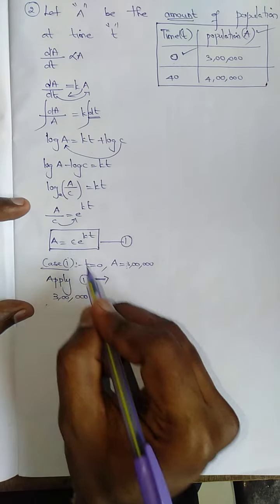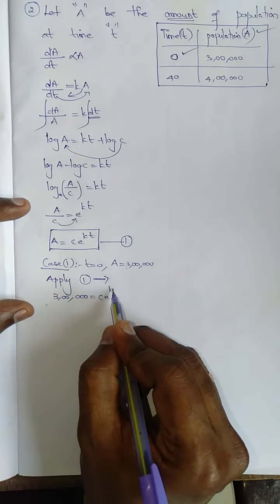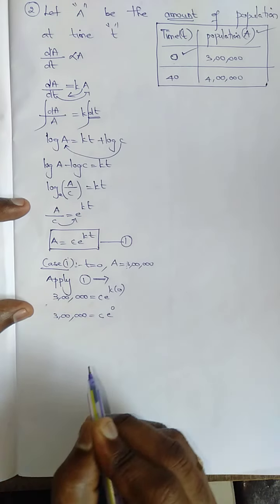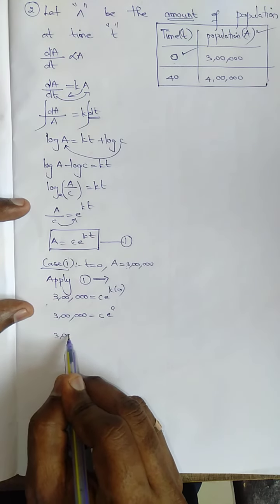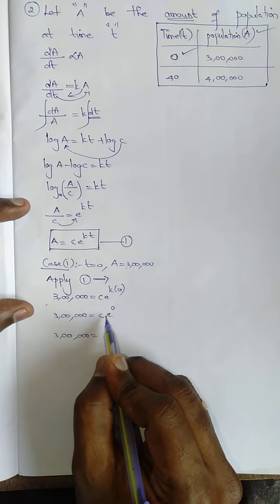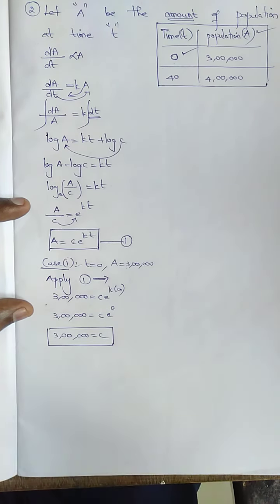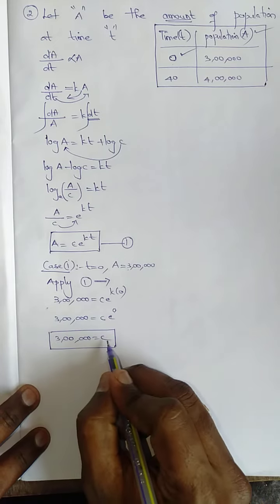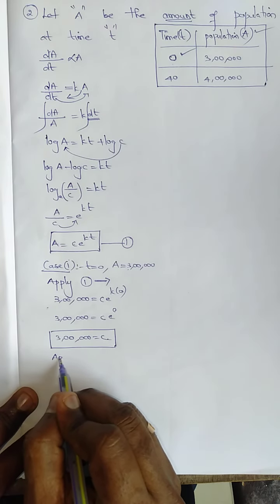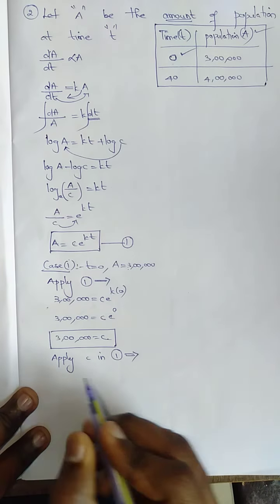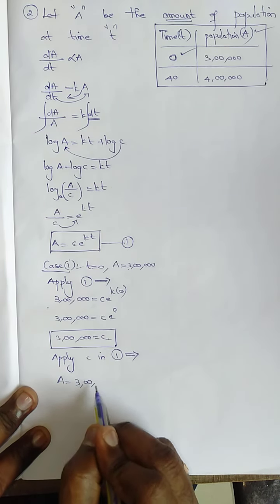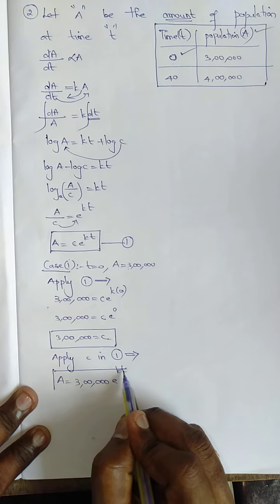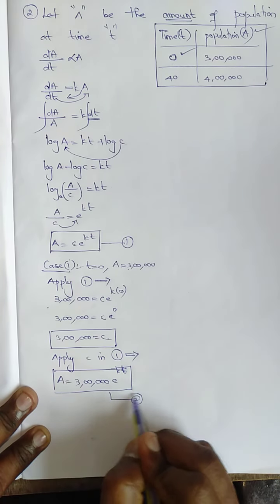3 lakh = C·e^(k×0). e^0 = 1, so 1 × C = C, therefore C = 3 lakh. I have found C. Now apply C into equation 1, so A = 3 lakh × e^(kt). Keep this as equation 2. This becomes the main equation.